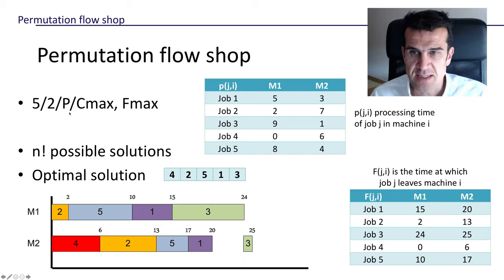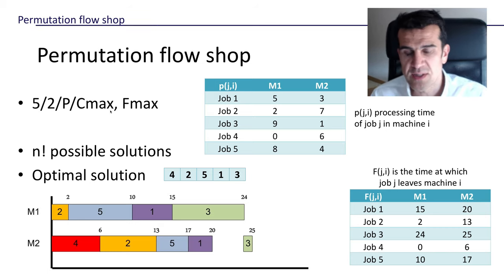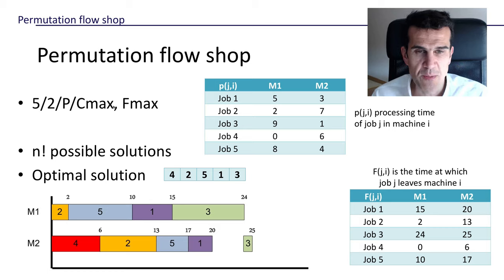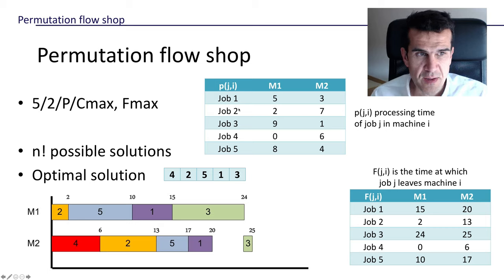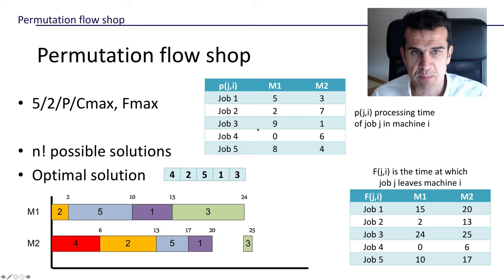It's a static permutation flow shop and we're interested in minimizing the makespan — the completion time of all the jobs. Since the problem is static, the completion time and the flow time of each job are the same. The data of the problem is the processing time of each job on each machine, given by this matrix. For instance, job two has to stay at machine two for seven units of time.